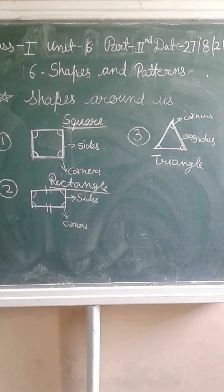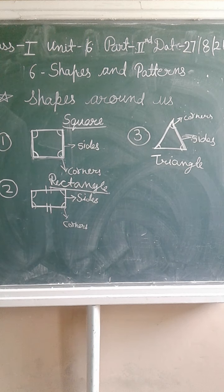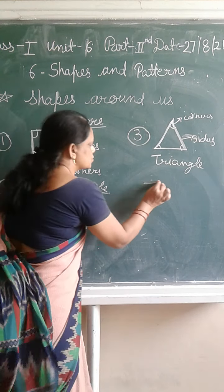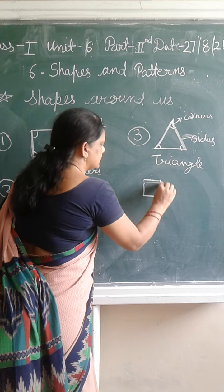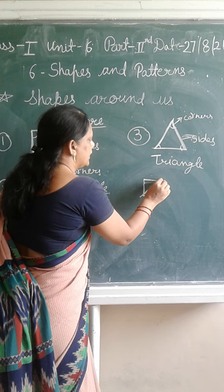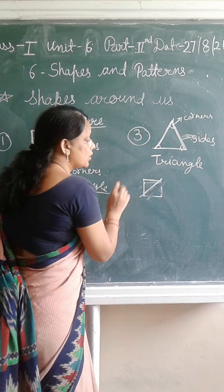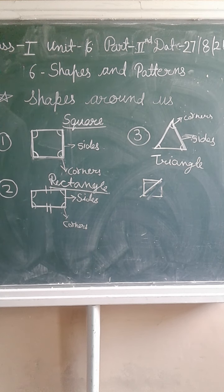For example, a sandwich bread slice — we have a square shape, but if we cut it into two parts, we get a triangle shape because it has three sides and three corners. You can also see triangle shapes in road signs and traffic lights.